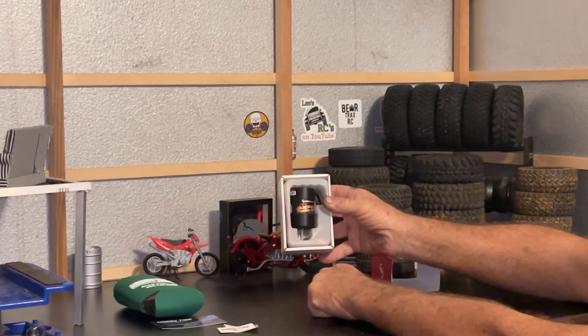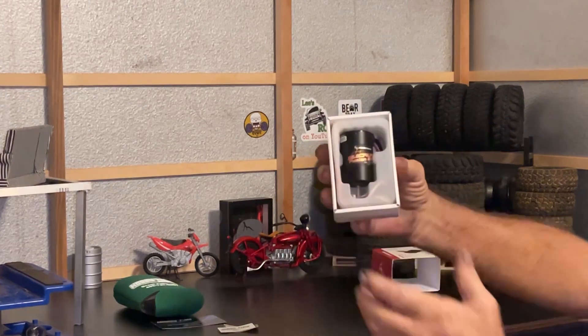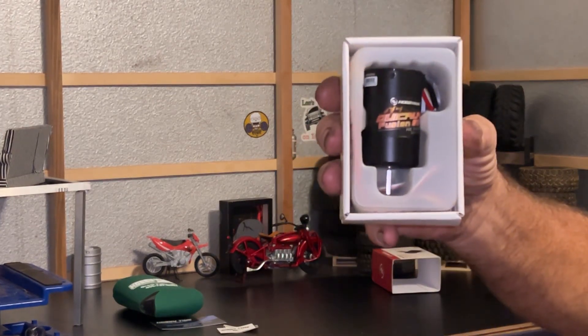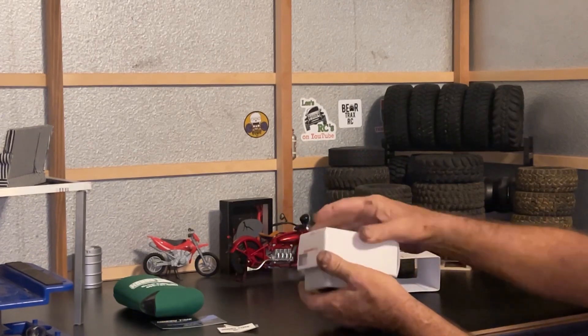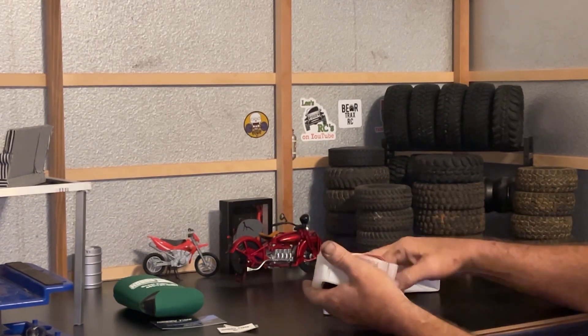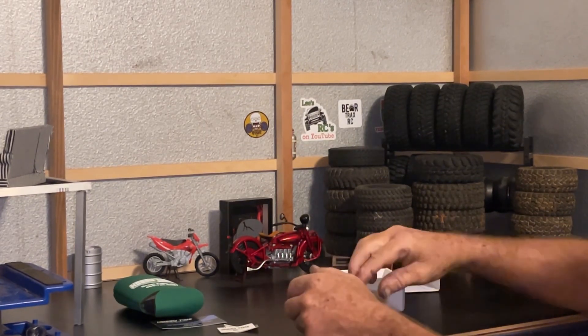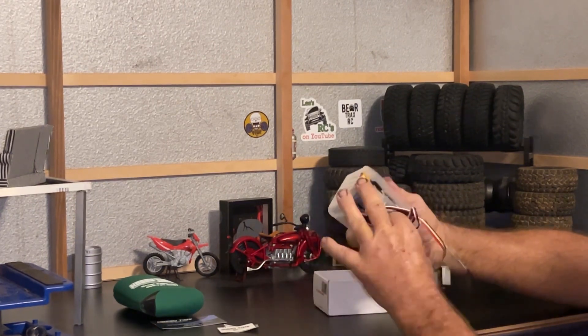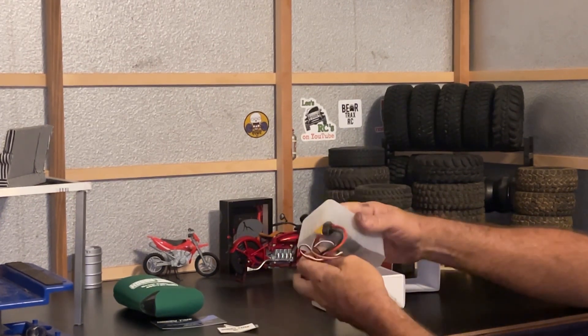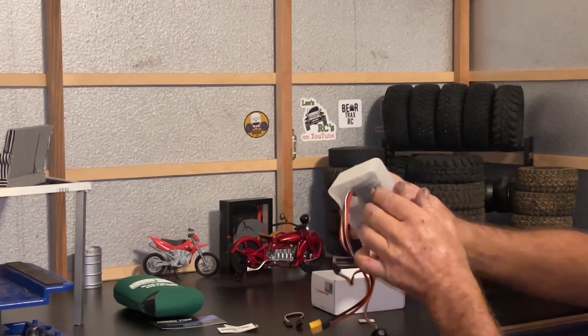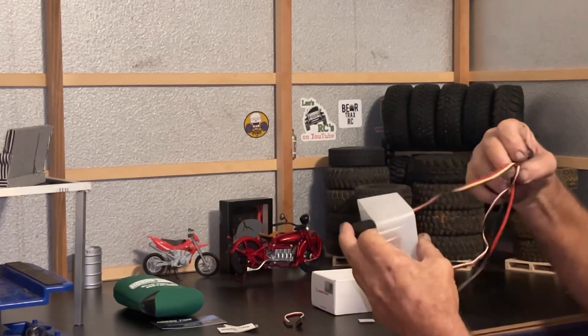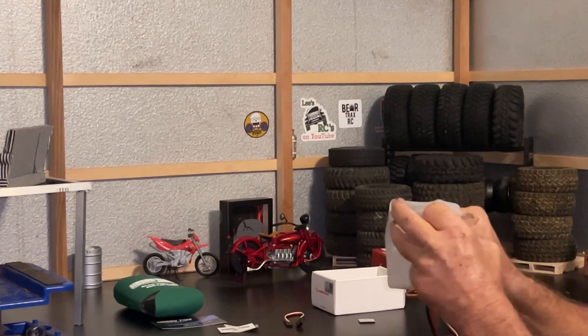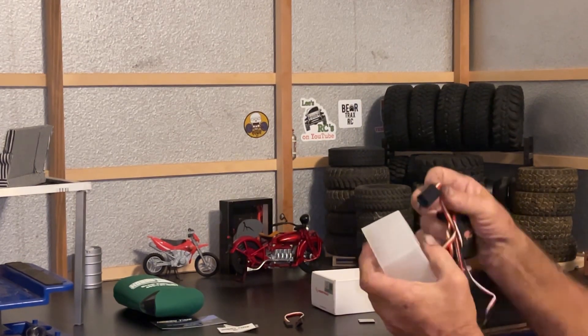There it is out of the package. Get you a little bit closer to it. Comes with your book, all your wires of course, two-sided tape for your power switch, zip tie for your wires, comes with an XT60 connector.